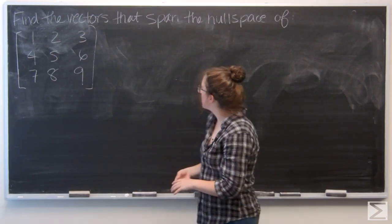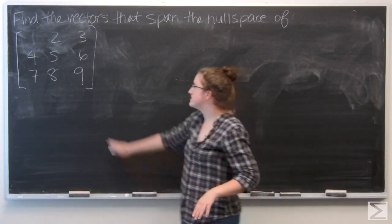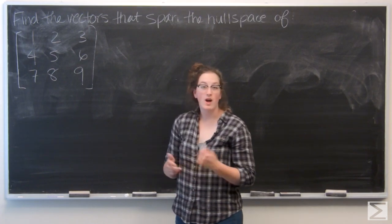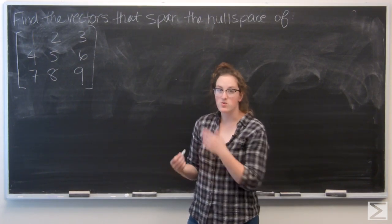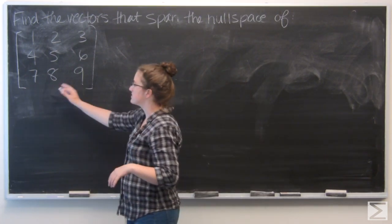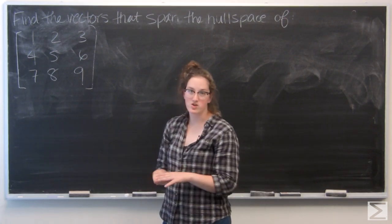For this question, I'm asked to find vectors that span the null space of this matrix. So I want to think about setting that matrix equal to 0, x1, x2, x3, and putting it in reduced row echelon form.